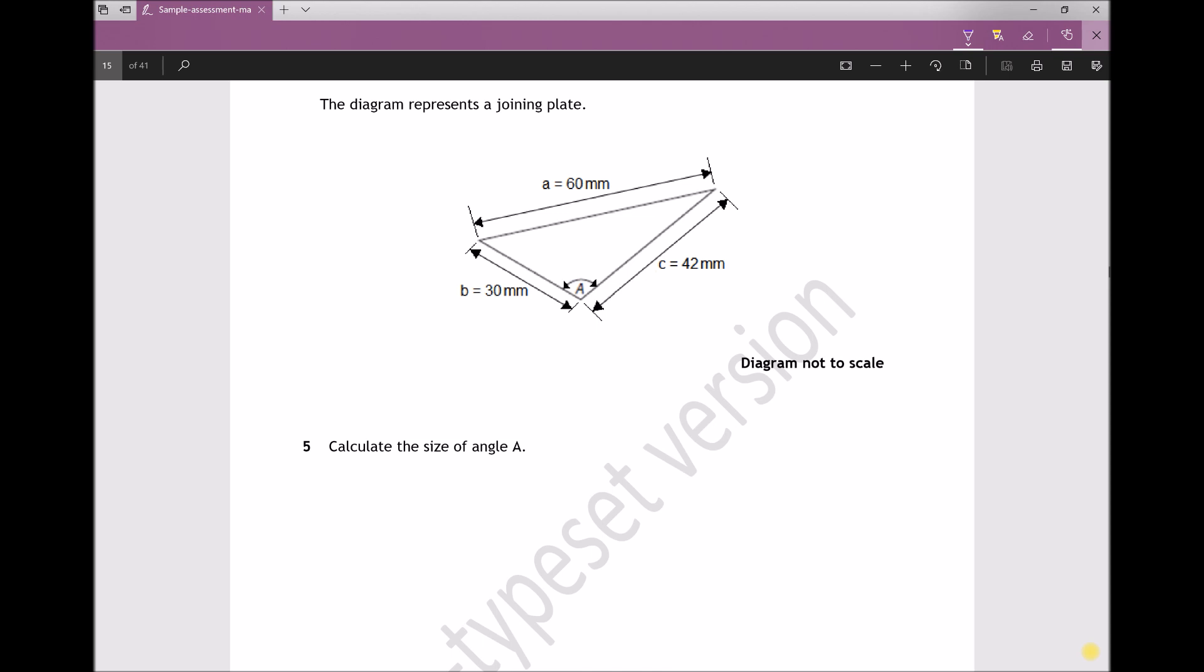Whenever we have a non-right angle triangle, we're looking at using either the sine rule or the cosine rule, but the sine rule relies on us knowing at least one angle.